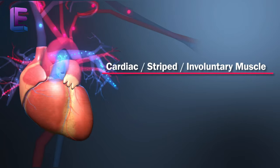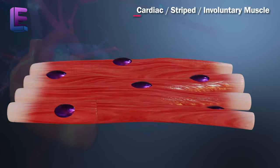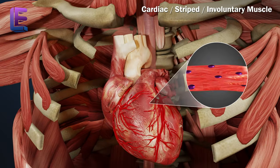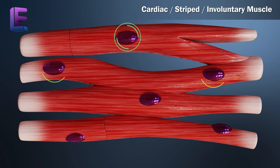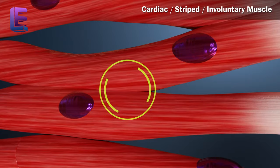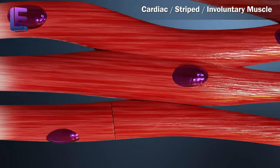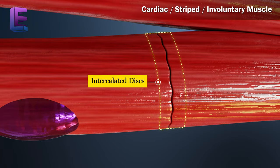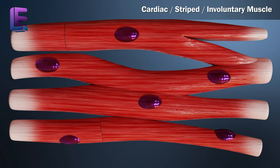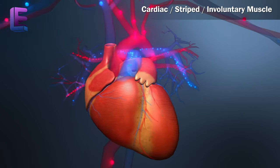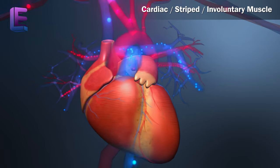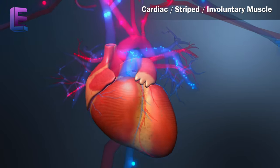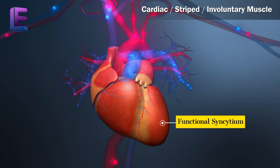Cardiac or striped or involuntary muscles are striped like skeletal muscle. They form the myocardium of vertebrates. Cardiac muscle cells are short and cylindrical with one or two nuclei. They have joints between them to ensure the conduction of electric signals throughout the heart. Cardiac muscles have intercalated discs, which are their differentiating feature and contain gap junctions. An excited myocardial cell quickly excites all its surrounding myocardial cells and causes a complete cardiac contraction. Due to this, cardiac contractions happen uniformly, so the cardiac muscle is called a functional syncytium.